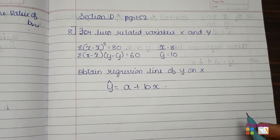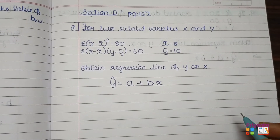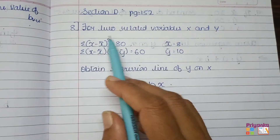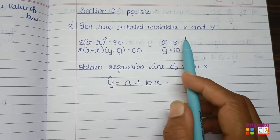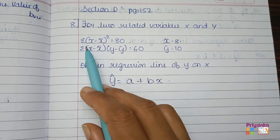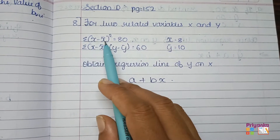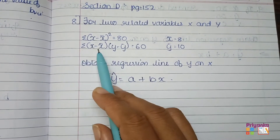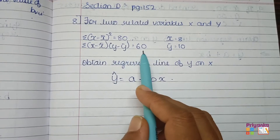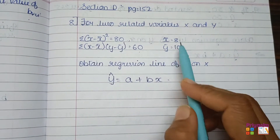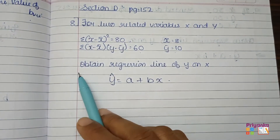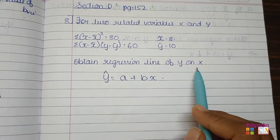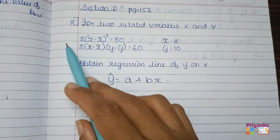Section D starts from page number 152, and the solution questions start from question number 8. For two related variables x and y, the information given is: sigma (x minus x̄)² is 80, sigma (x minus x̄)(y minus ȳ) is 60, and the values of x̄ and ȳ are given. Out of this, we have to find the regression line of y on x.